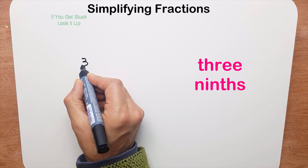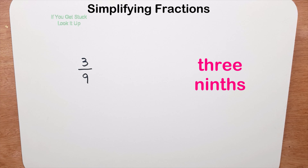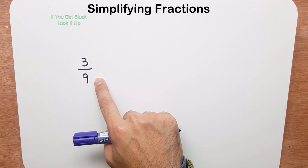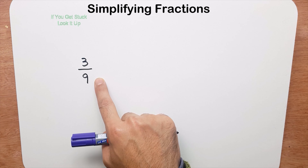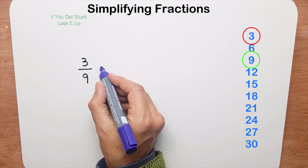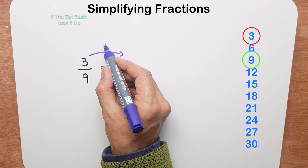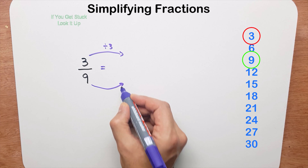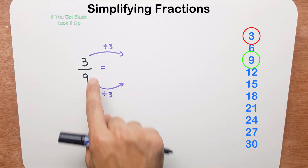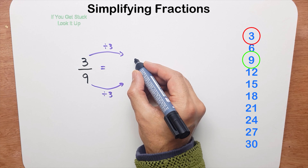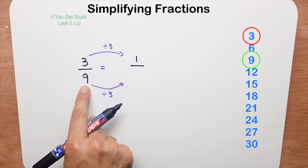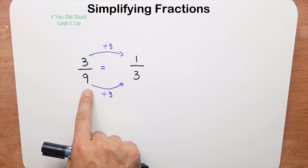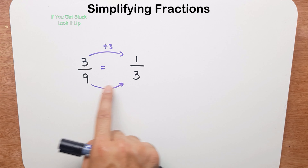My next question is 3 ninths. I ask myself which times table the numerator and denominator are both in. I can see they're both in the 3 times table. So I divide the numerator by 3, and whatever I do to the numerator I have to do to the denominator — so I divide that by 3 as well. 3 divided by 3 is 1, and 9 divided by 3 is 3. So 3 ninths has been simplified to 1 third.